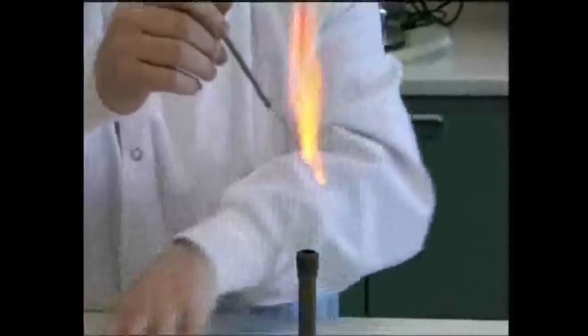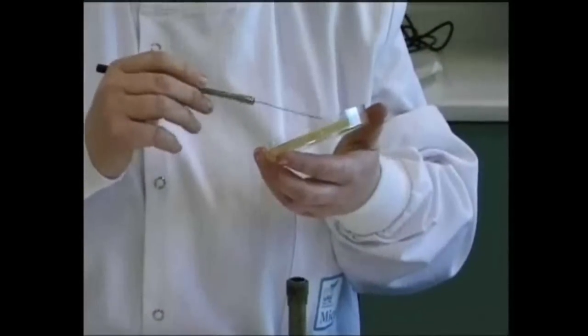Re-flame the loop, and pick up a very small part of a single isolated colony of your test bacteria, and mix it with the water on the slide to form a very slightly cloudy suspension.